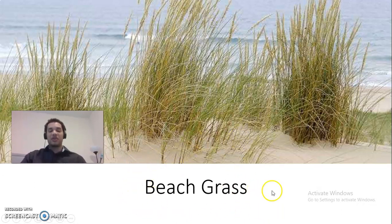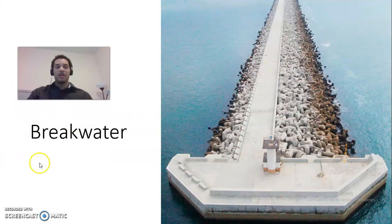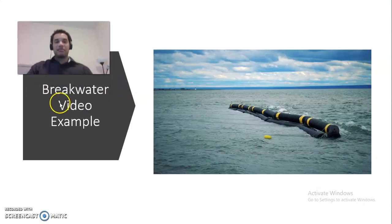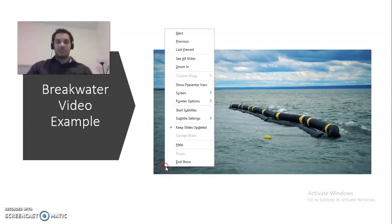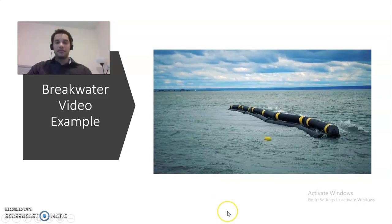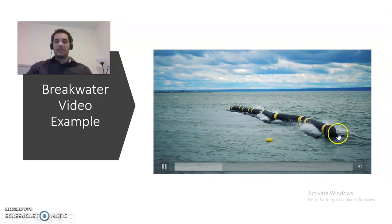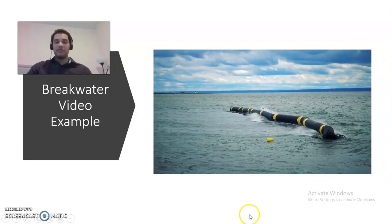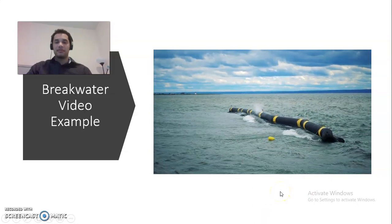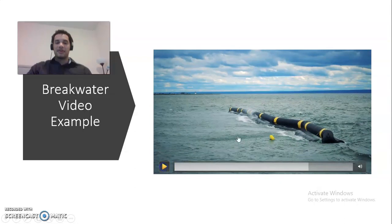Beach grass. All right. So we have beach grass. So beach grass are basically just the grass being grown from the coast, right? Okay. Breakwater. So breakwater is this long harbor right here that you see on the ocean. So this is called breakwater right here. Next is breakwater video example. I'll probably show you this. Why not? I think it's short. So this is a breakwater example. So it shows you what a breakwater does. All right. Let's go to the next one.